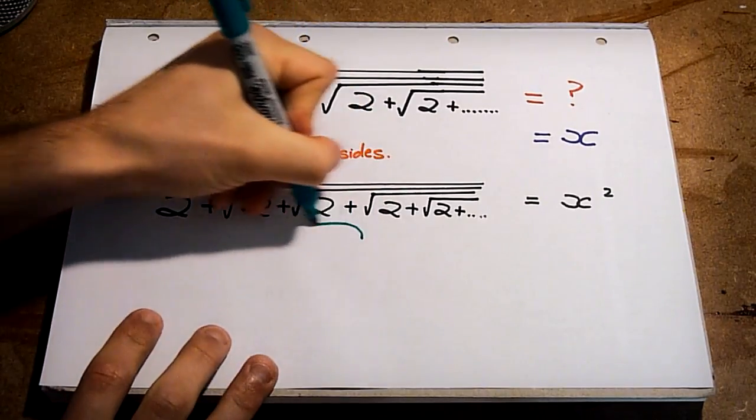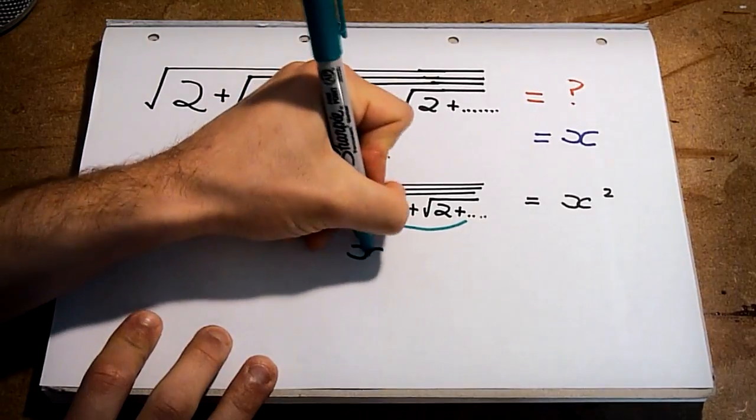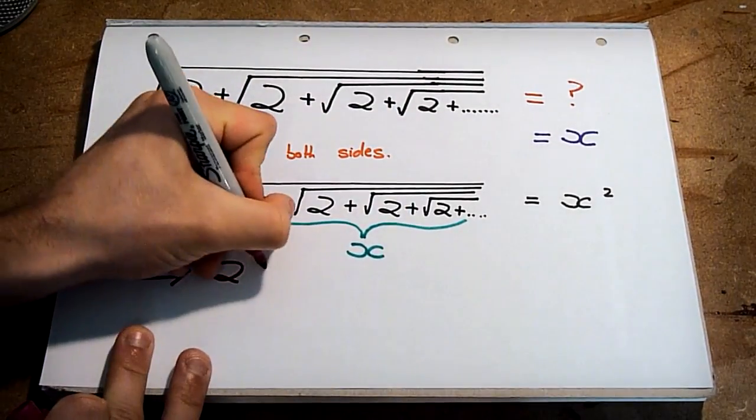Notice that the square root of 2 plus the square root of 2, etc. is exactly what we started with, and so this left-hand side is 2 plus x.